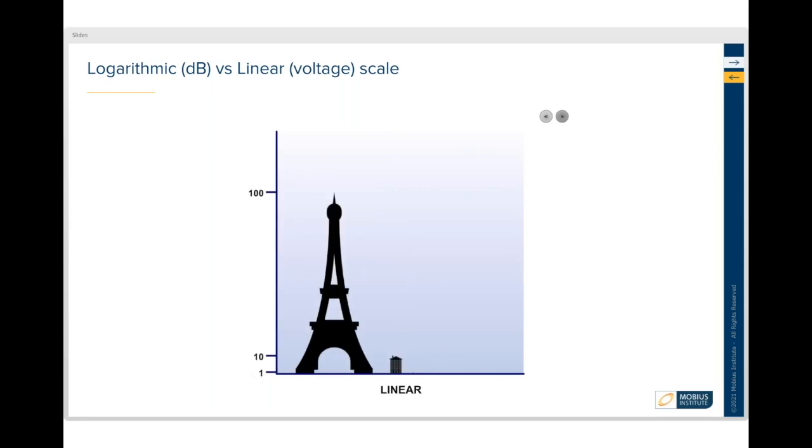But imagine if you were standing next to a building which was standing next to a tower. Now with that tower in view, we can see the building. If you look really closely, you can see the little man, and you can't see the rat. Now the tower is 10 times the height of the building, which is 10 times the height of the man, which is 10 times the height of the rat. And you might say, why am I talking about this? Because if you were dealing with ultrasound on a linear scale and we have amplitude levels that are 10 times, 100 times, 1000 times the amplitude, it's very hard to see them on the same scale.